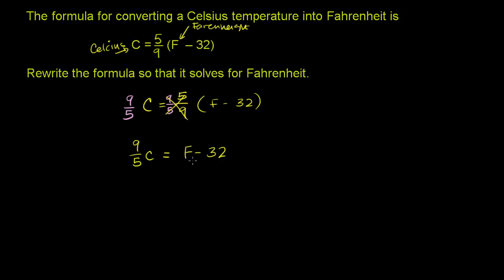Now, we want to solve for the Fahrenheit temperature. So let's see if we can get rid of this 32 from the right-hand side. Easiest way I know how to do that is to add 32 to both sides of this equation.